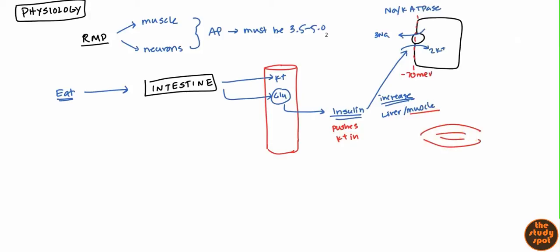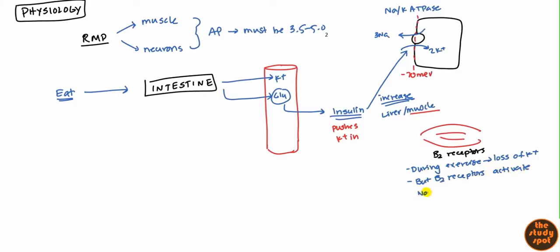Now let's look at muscle. Potassium does go inside the muscle, so it acts as a reservoir. The muscle has beta-2 receptors around their blood vessels. During exercise, you actually have a loss of potassium — the muscle will release potassium, causing hyperkalemia in the surrounding vessels and hypokalemia within the muscle. But the beta-2 receptors can activate the same sodium-potassium ATPase channels we talked about earlier, which pushes potassium back in. So not only does insulin push potassium back in, but beta-2 receptors do as well.